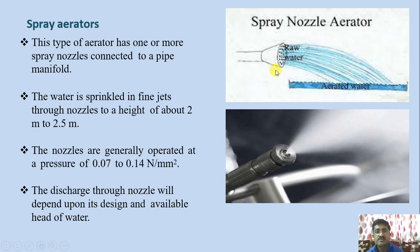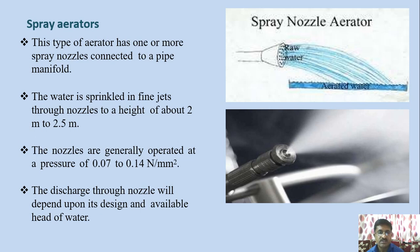Spray aerators use one or more spray nozzles connected to a pipe manifold. The water is sprinkled in fine jets through nozzles to a height of 2 to 2.5 meters. The nozzles are generally operated at a pressure of 0.07 to 0.14 Newton per mm squared. The discharge through the nozzle depends upon its design and available head of water.